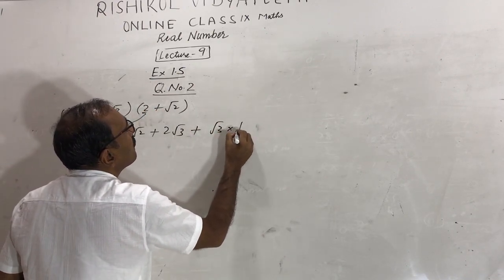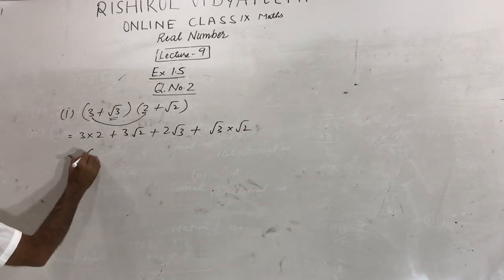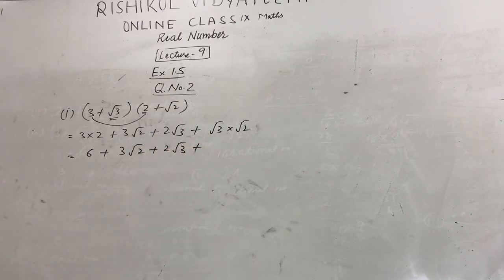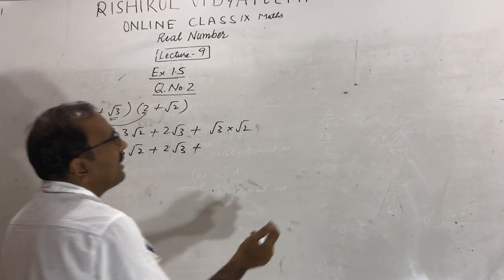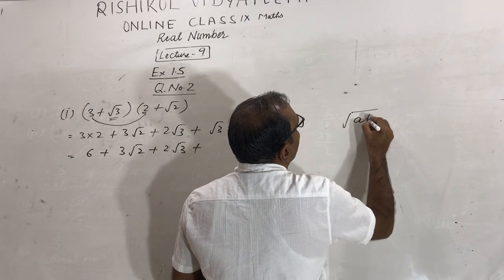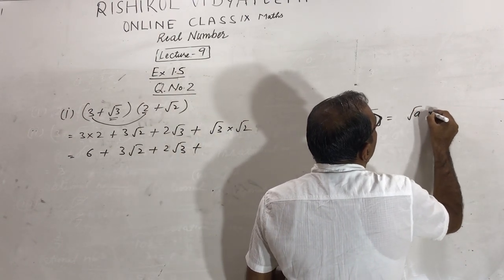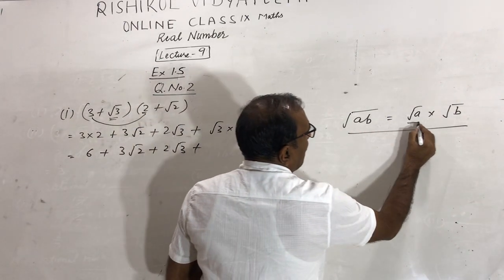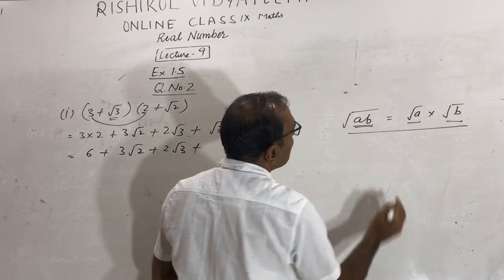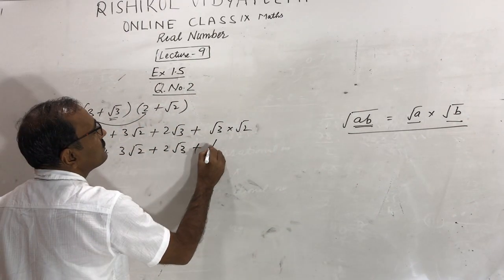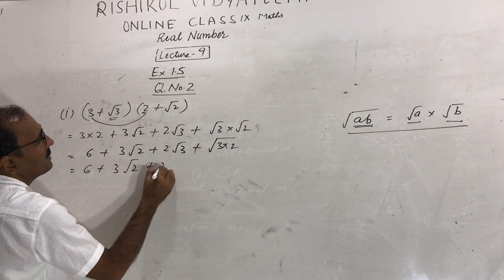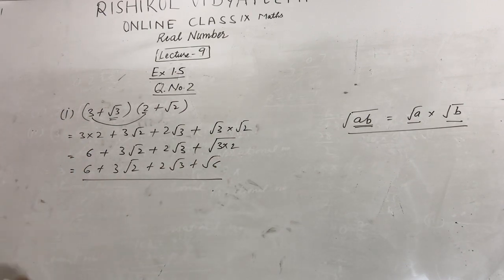Using the identity √a × √b = √(ab), so √3 × √2 equals √6. Therefore the result is 6 + 3√2 + 2√3 + √6. That is the answer.